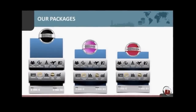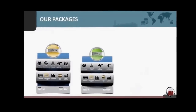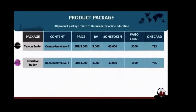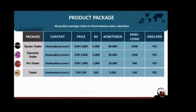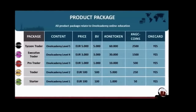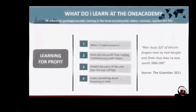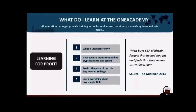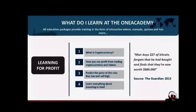It's free to become a member and join One. However, if you would like to profit and earn any bonuses, you have to purchase one of our five product packages: Tycoon, Executive Trader, Pro Trader, Trader, or Starter. Tycoon costs 5,000 euros, Executive Trader costs 3,000 euros, Pro Trader costs 1,000 euros, Trader costs 500 euros, and Starter is 100 euros. All packages include excellent educational material from our One Academy. The One tokens are included in the product packages as a free bonus.